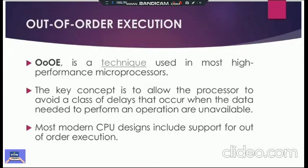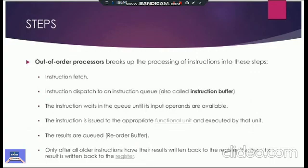Modern CPU designs include support for out of order execution. So let's discuss the steps involved that are helpful in out of order processors. The first step is instruction fetch, then instruction dispatch, and after that, the instruction goes into the instruction buffer. In the instruction buffer, all instructions are placed in sequential order. The instruction waits in the queue until its input operands are available. It may be that the CPU will wait because the operands it needs are taking time to come from memory to cache. That's why it stops that instruction, breaks the order, and starts the next execution.